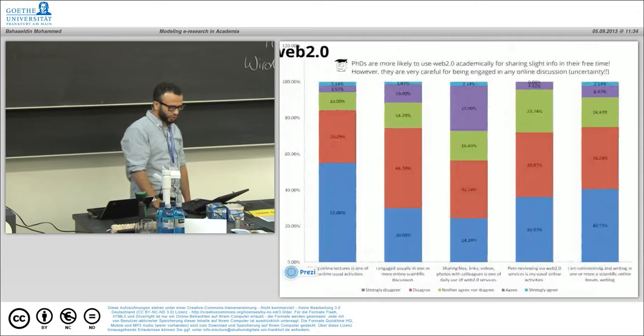Attitude towards web 2.0: PhDs are more likely to use web 2.0 academically for sharing light information in their free time. However, they are very careful about being engaged in any online discussion.